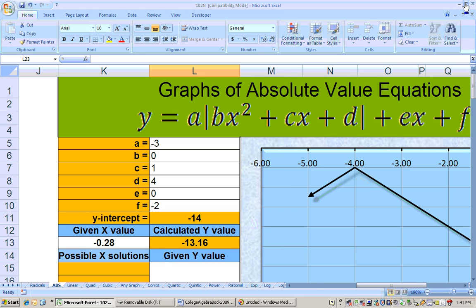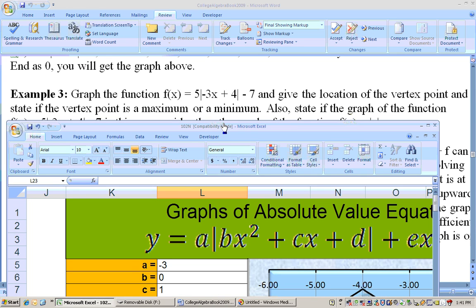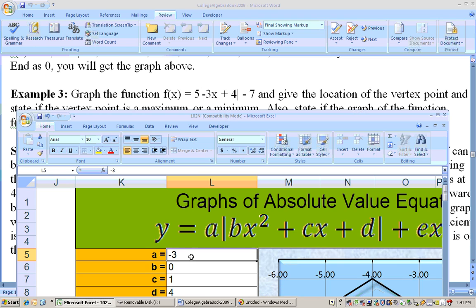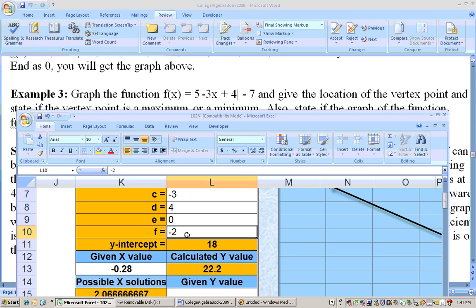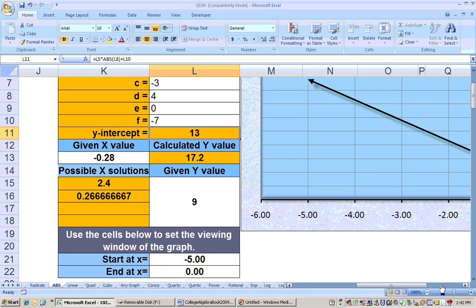Let's shrink this down here a little bit so we can type this in. The a would be 5. The b, well, there's no squared term on here. So, the b would be 0. The c would be minus 3, or negative 3. The d would be the constant, which is 4. The e would be 0 because there's no x term. And then, finally, a negative 7 is a constant at the end.